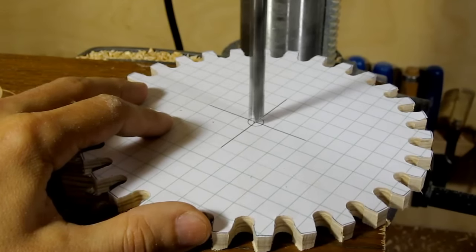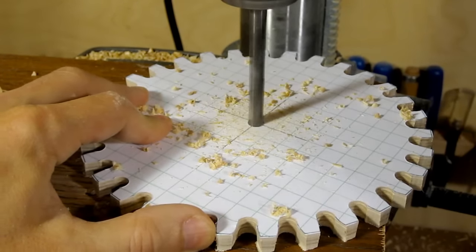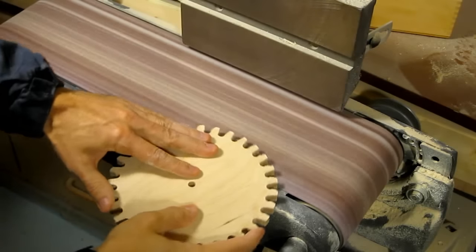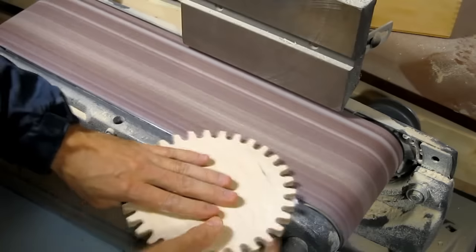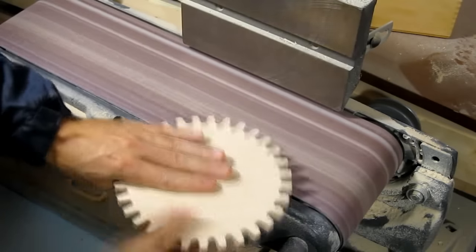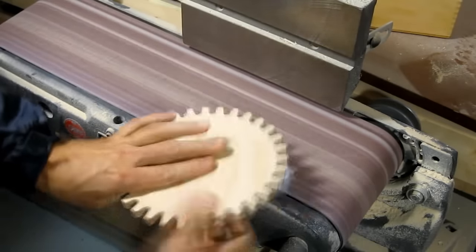Now we're done with the paper template. But before we get rid of it, let's drill a hole in the middle. Next I get rid of the template by just sanding it off on the belt sander. That's a bit messy though because it actually kind of comes off in chunks so you might want to just scrape it off with a chisel.